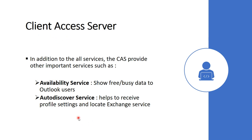Next is the Autodiscover service. Autodiscover is a very important service that helps with Outlook profile configuration on your desktop or mobile phone. You just need to enter your username and password while configuring the Outlook profile, and in the background this service runs to get your mailbox configuration. After a few seconds, your Outlook profile will be configured automatically.